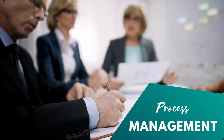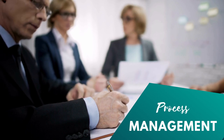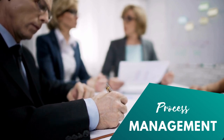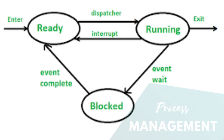Process Management. Process management is all about handling the different tasks and activities within an operating system. A process is like a running instance of a program. It represents a specific task or unit of work that the operating system can schedule and execute. A process consists of program code, data, stack, and other important information stored in a data structure called the Process Control Block, or PCB.